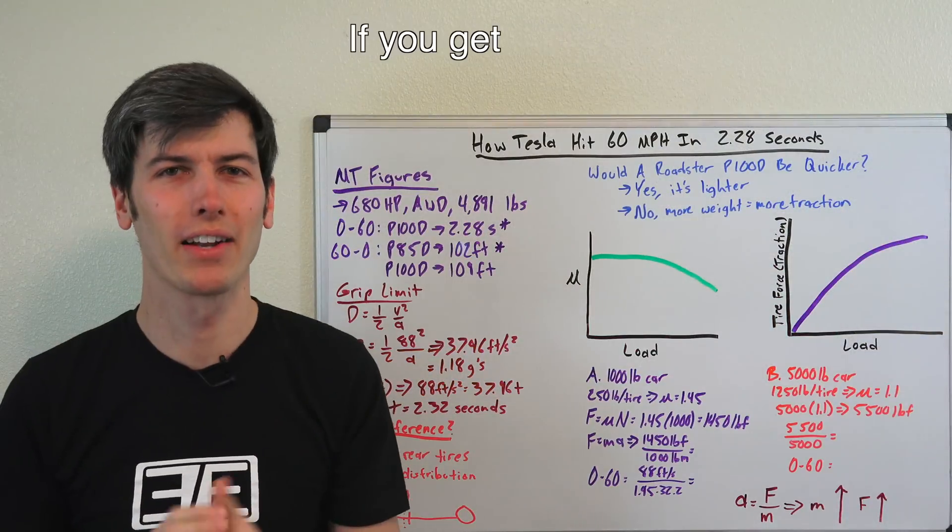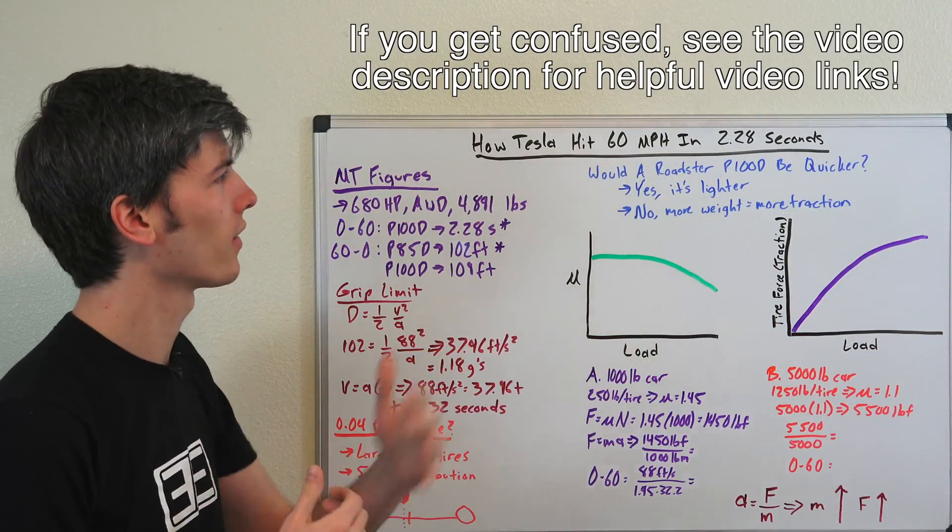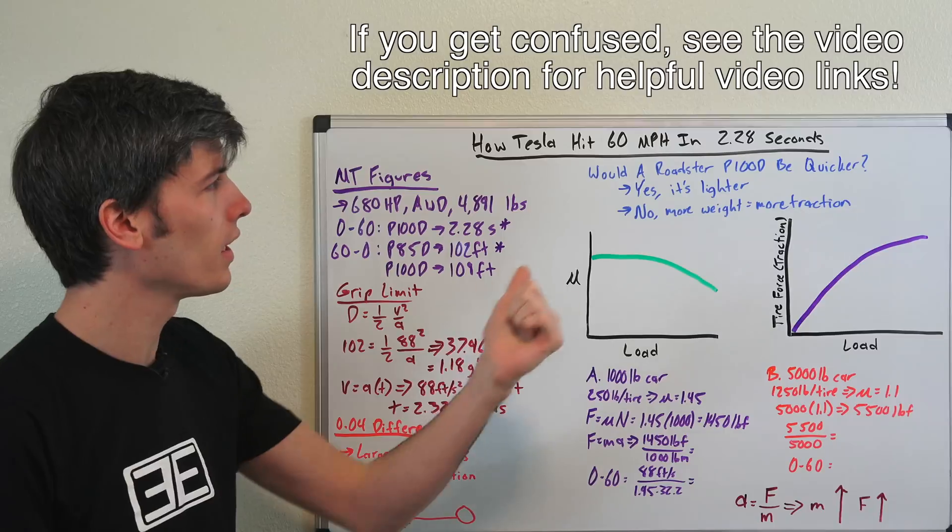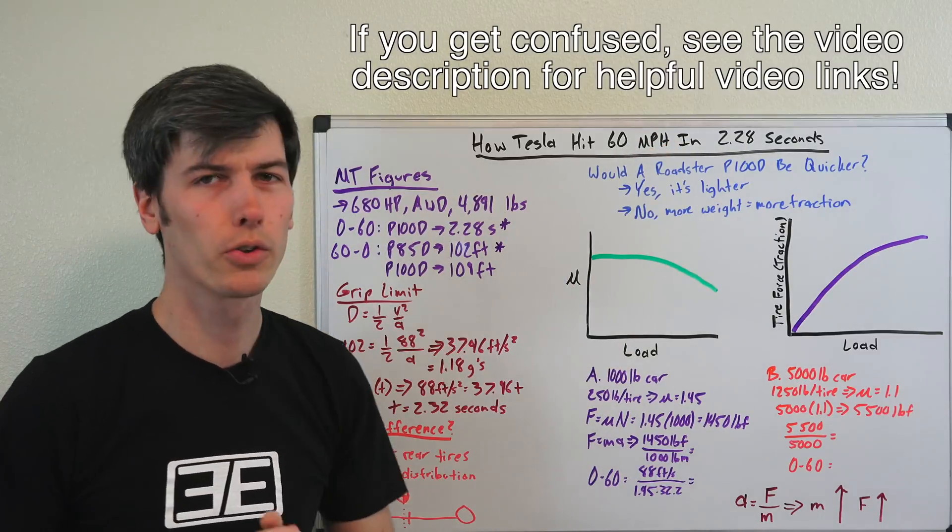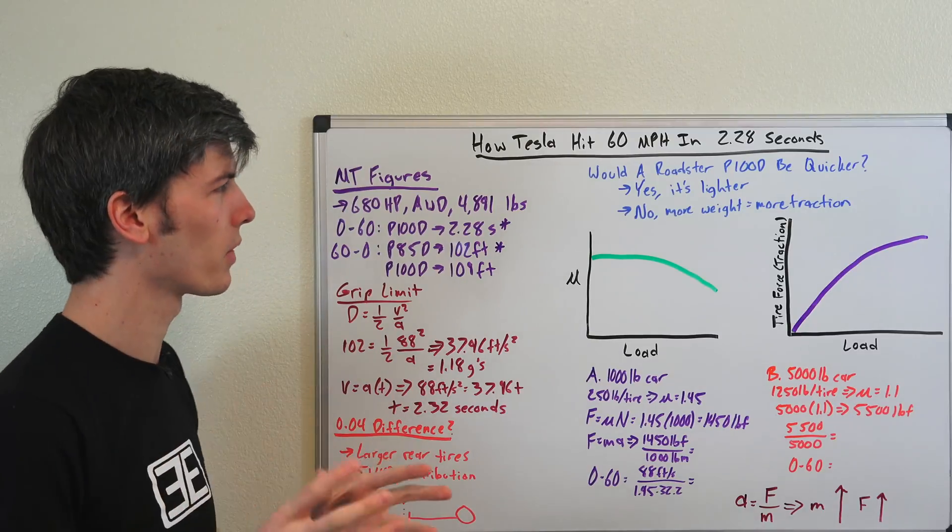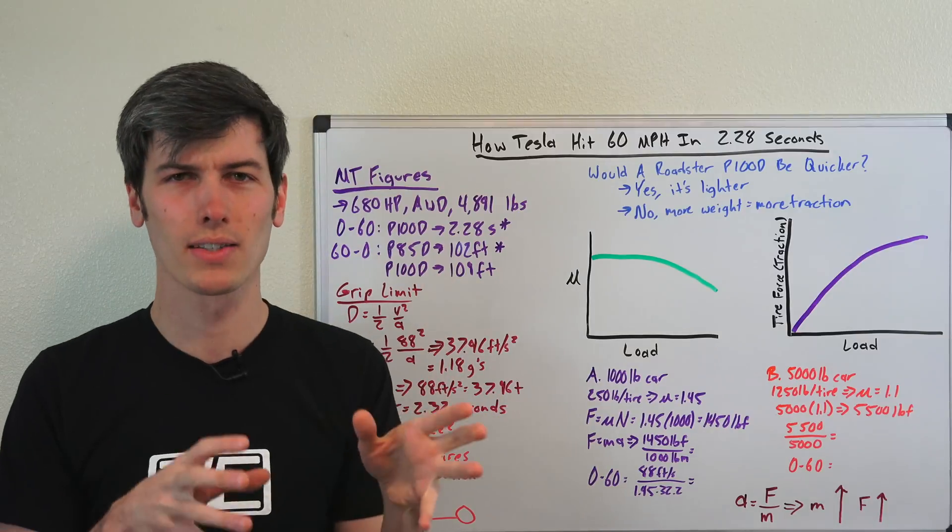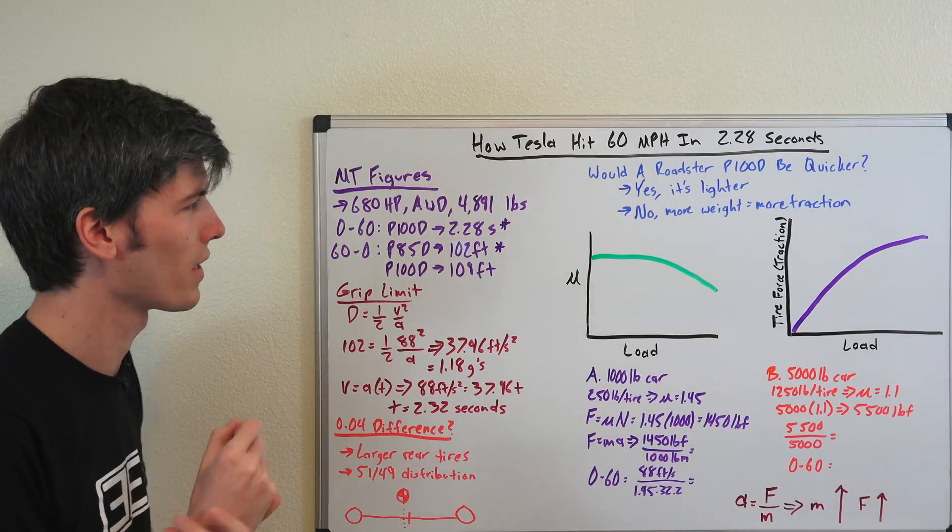This video was inspired by a Reddit thread. Someone posted that Motor Trend had tested the new Tesla P100D and they broke their record, the first car they've ever tested getting under 2.3 seconds 0 to 60 time. But then there was a lot of discussion of what if we put this package into a Tesla Roadster. Would it be faster or would it be slower because the Roadster weighs less?